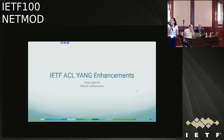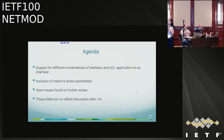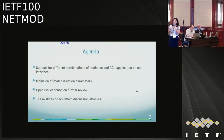Good afternoon. Today I'll be presenting the updates Mahesh and I made for the ACL Yang model. The last time we presented draft number 11, and we've had three updates since then. In drafts 12, 13, and 14, we've incorporated a lot of new match and action criteria, statistics, and the attachment of ACLs to interfaces. This data was gathered by looking at several vendors — the two big ones were Juniper and Cisco, and also Arista.